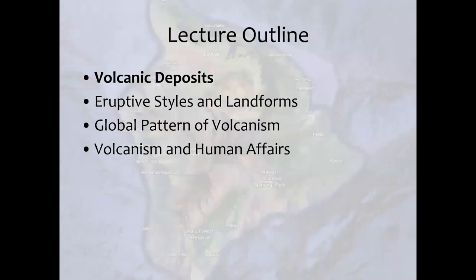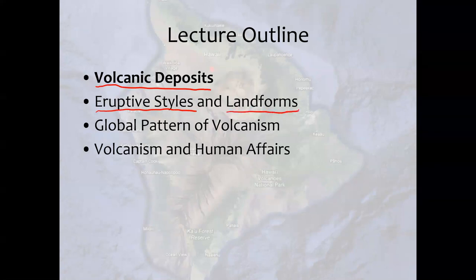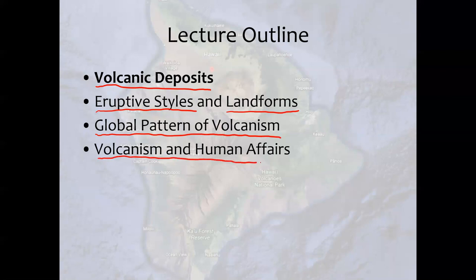I'm going to break this up into four parts. First, we'll talk about volcanic deposits. Then we will get into more information on eruptive styles and landforms that result from volcanic eruptions. We'll talk about the global pattern of volcanism and connect it to plate tectonics. And then we'll talk in detail about volcanism and human affairs — both good and bad effects of volcanism that affect humans.